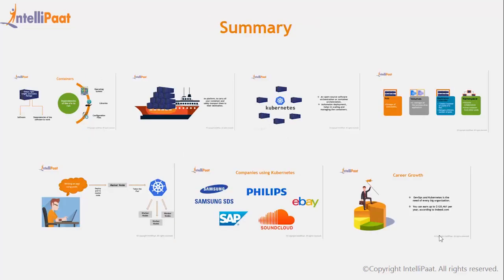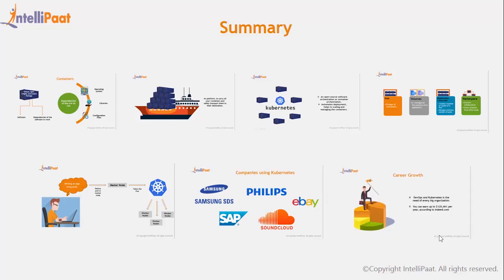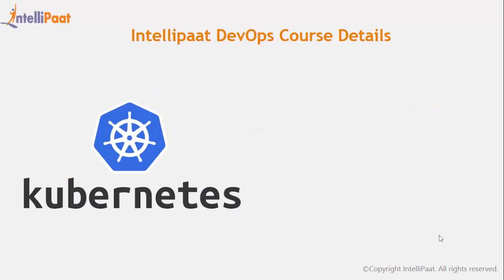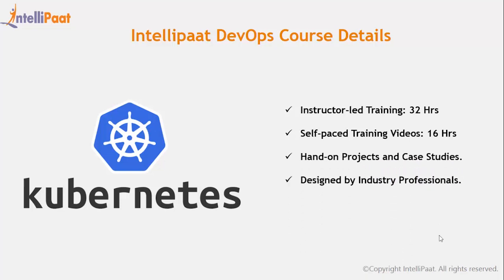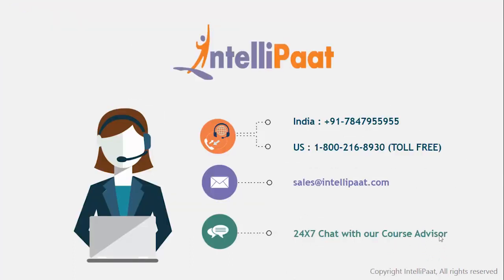Let's recap on what we covered so far. We started by understanding what are containers, then learned what is Kubernetes, its components, and how Kubernetes works. We saw different big companies using Kubernetes and finally the growth it offers you. You can get a 360-degree DevOps course at Intellipat with 32 hours of instructor-led training, 16 hours of self-paced training, and hands-on projects, all designed by industry professionals. Also, get the DevOps industry certification. I hope this video was informative for you. For any enquiries, contact Intellipat anytime. In the subsequent videos, we shall be going through the practical session of Kubernetes. Thank you for watching, have a great day and career ahead.